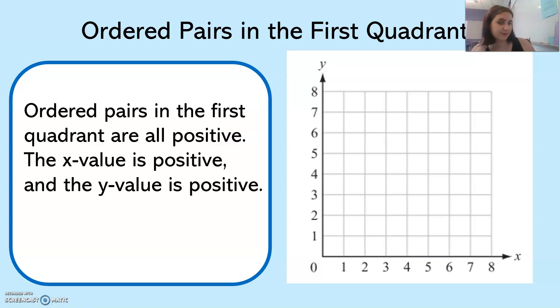Ordered pairs in the first quadrant are all positive. The x value is the first number in an ordered pair, and the second number is the y value.